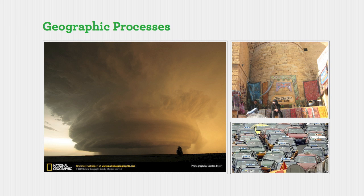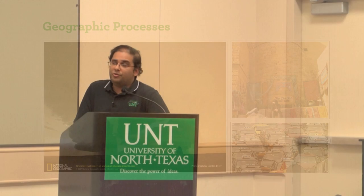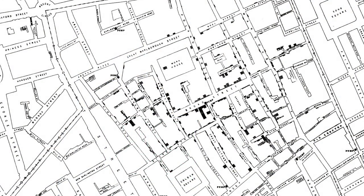These processes could be of different kinds — physical processes or cultural and economic processes. But what interests me the most are processes that result in differential health outcomes. The best example of that would be this map by John Snow in 1854, where he mapped the locations of cholera deaths in London and attributed the problem to a pump on Broad Street that was supplying contaminated water.